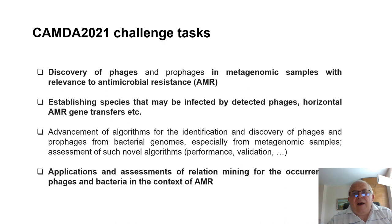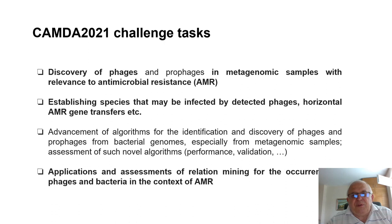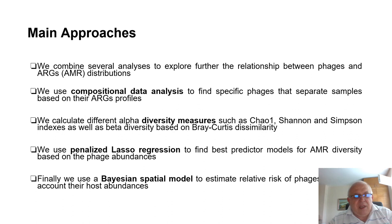The first task is to discover the phages from the metagenomic samples with relevance to antimicrobial resistance, followed by establishing the species that may be infected by these detected phages by horizontal antimicrobial resistance gene transfer, and how to apply and assess the relation mining for the occurrence of phages and bacteria in the context of antimicrobial resistance. All of this is done within a pipeline of different statistical models and approaches, which give us an opportunity to discover phages and prophages from bacterial genomes.